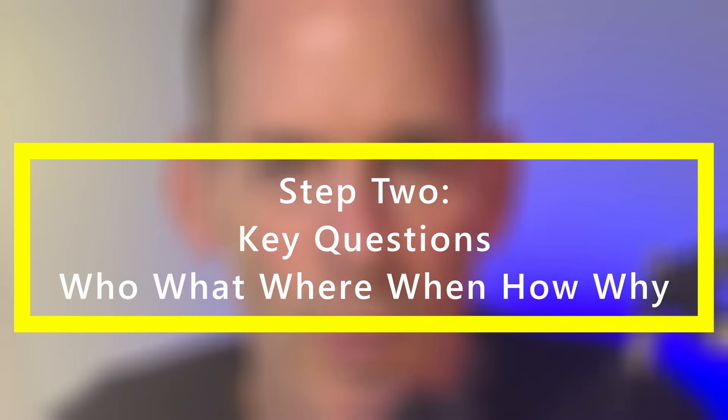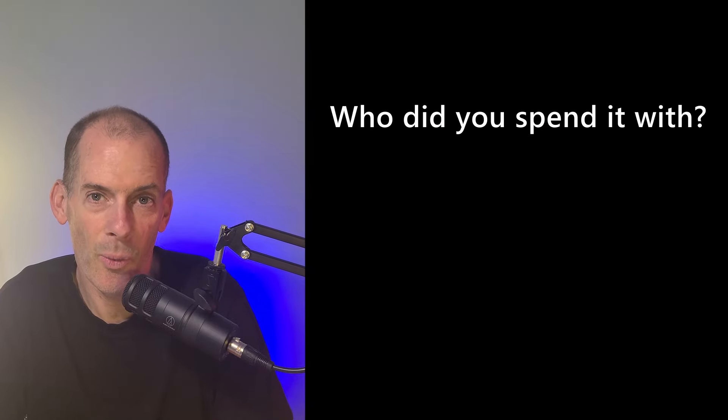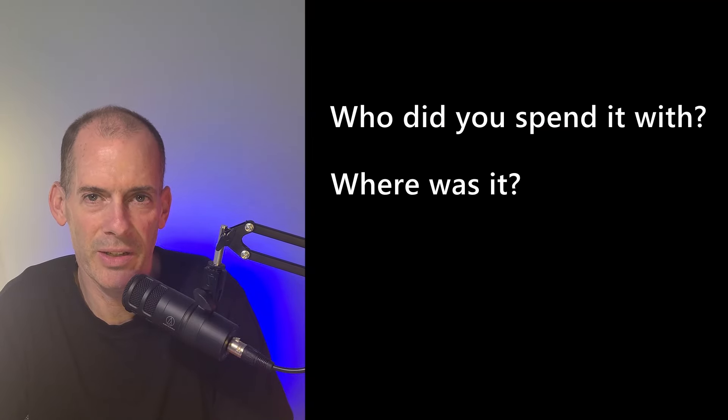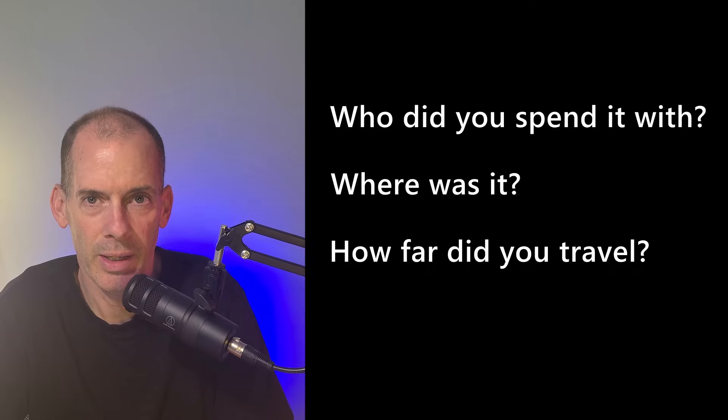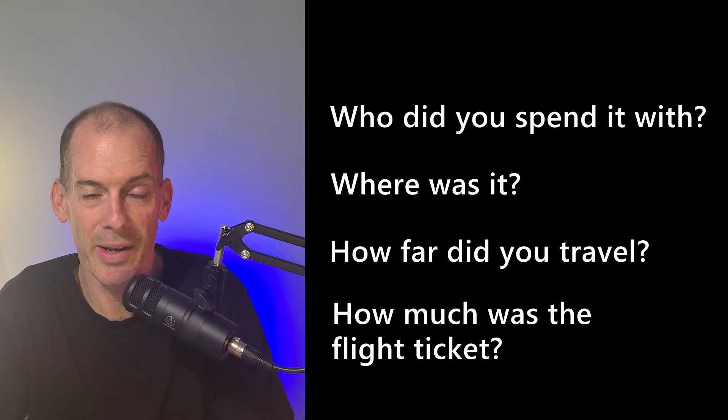Step two is called the who, what, where, when, how, why. People always finish these questions much too soon and don't give themselves a chance to speak all the way to the end. Don't just say that you were thankful to spend Thanksgiving with your family — go deeper. Who did you spend Thanksgiving with? Where was it? How far did you travel? How much did you spend on an airplane ticket? Getting into those specific details allows you to speak at least 10 to 15 seconds longer.